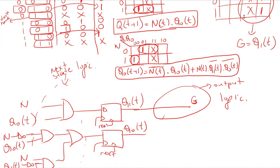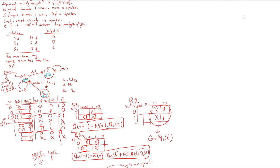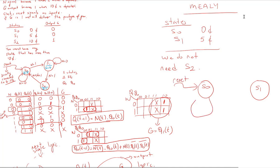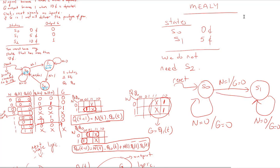Now let's do the Mealy version. In the Mealy machine we have only two states: S0 (0 cents) and S1 (5 cents). There is no S2 state — as soon as we have 5 cents and another nickel is deposited, we go back to S0 and deliver the gum. In the state diagram: reset goes to S0. From S0, if n=0 output is 0 and stay; if n=1 output is 0 and go to S1. From S1, if n=0 output is 0 and stay; if n=1 output is 1 and go back to S0.